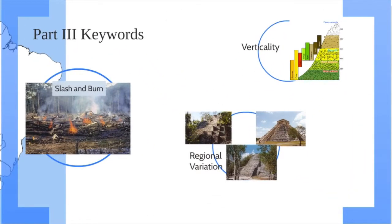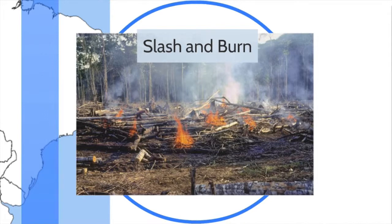The first thing I want to talk about is slash and burn. Slash and burn takes an area of forest, cuts it down, clears it, burns the brush, then grows there for one season. The benefits of slash and burn, which is also sometimes called swidden agriculture, is that it's very productive for the years that it's in use.